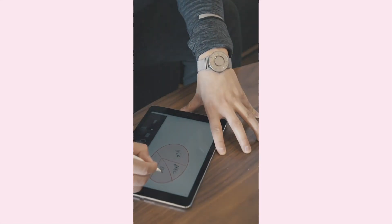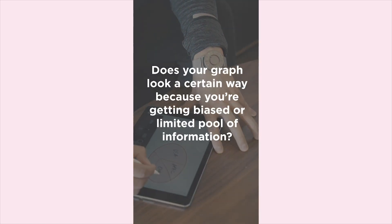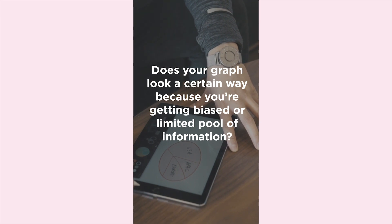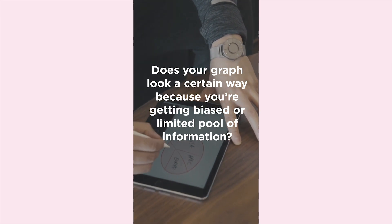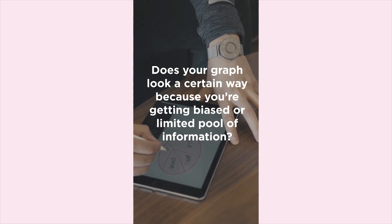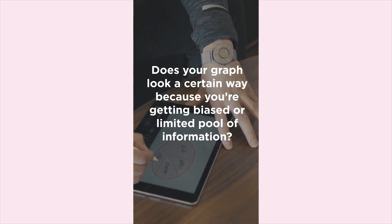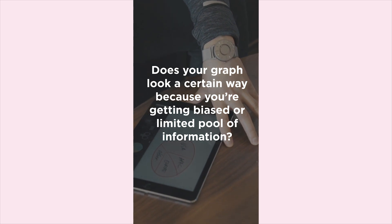Data visualization forces you to think about data in the big picture. What are you not representing? Does your graph look a certain way because you're getting your data from a biased or limited pool of information? For example, a graph showing the average salaries of white women in Los Angeles will look way different than a graph representing the average salaries of black women.